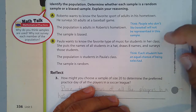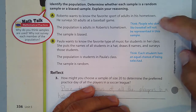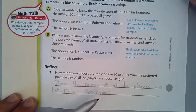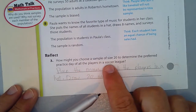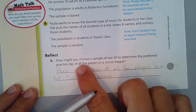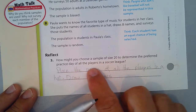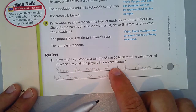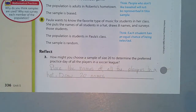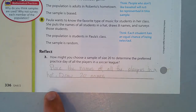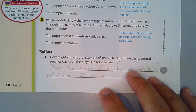Equal chance is a random sample; not equal chance is a biased sample. So let's reflect on this: how might you choose a sample of size 20 to determine the preferred practice day of all the players in a soccer league? You can simply place the names of all the players in a hat and draw 20 names — everyone has an equal chance of being selected.